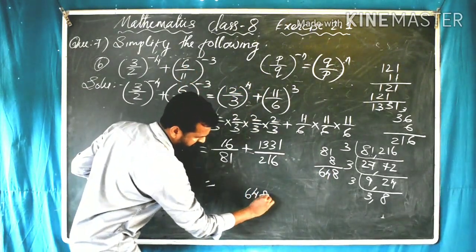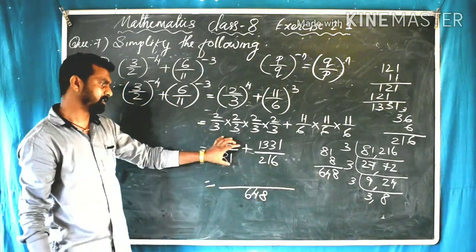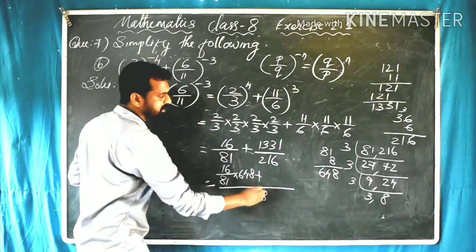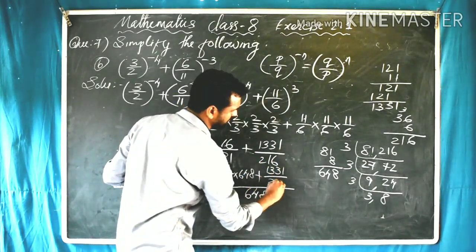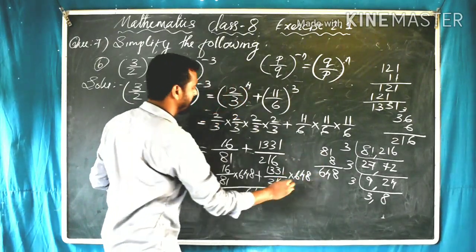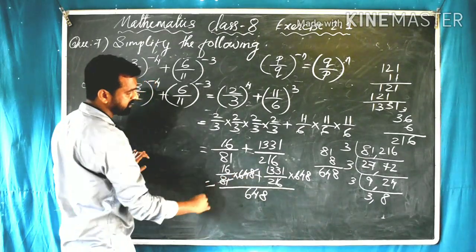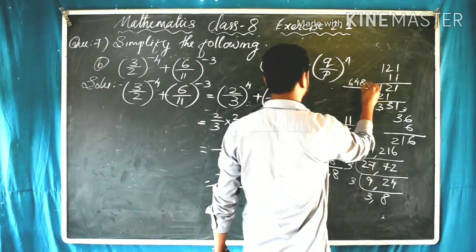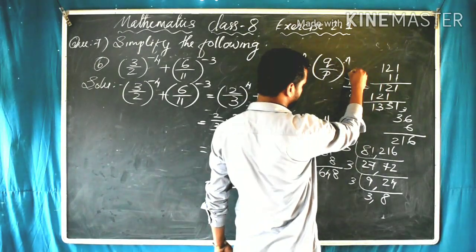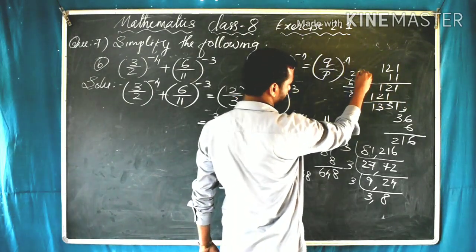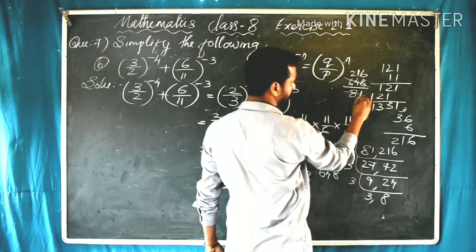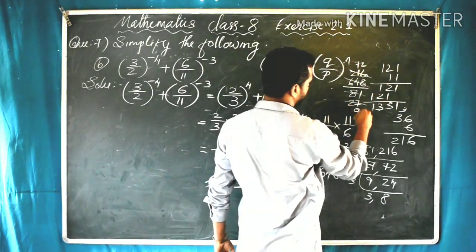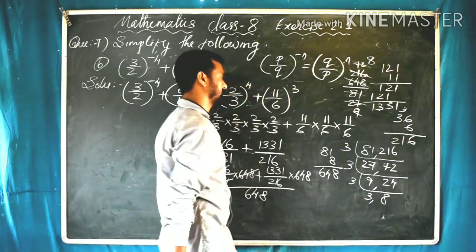We write 648 as the denominator. For the numerator, we compute: first rational number times LCM — that is 16 divided by 81 times 648 — plus second rational number times LCM — that is 1331 divided by 216 times 648. Cancelling: 648 divided by 81 equals 8, and 648 divided by 216 equals 3.